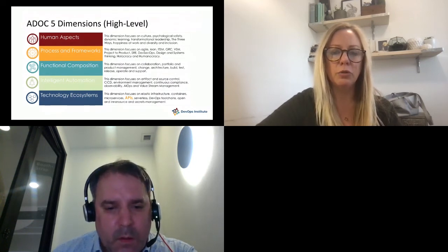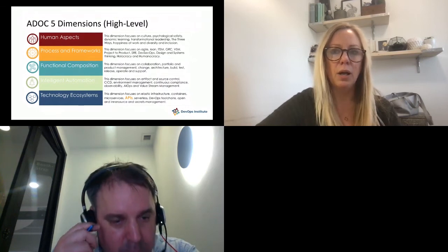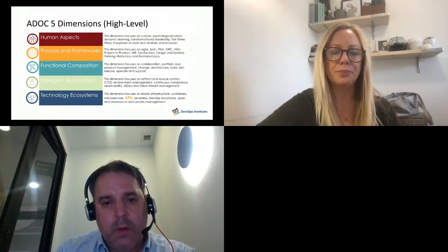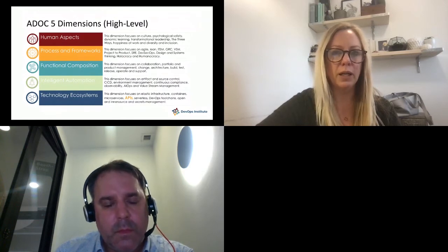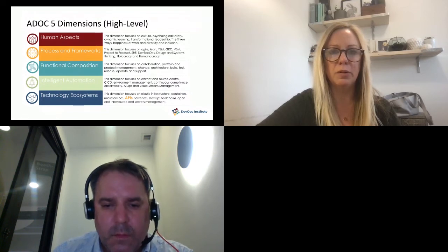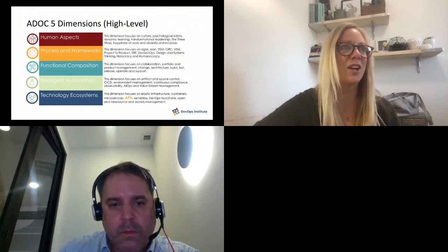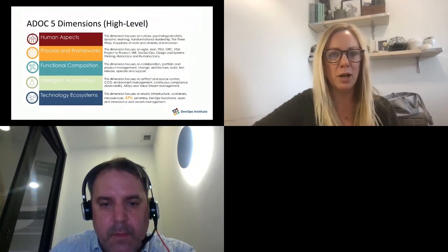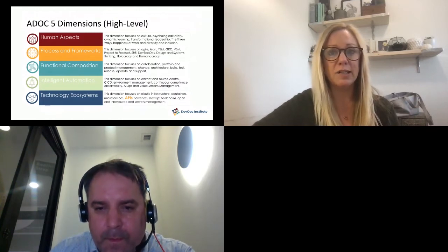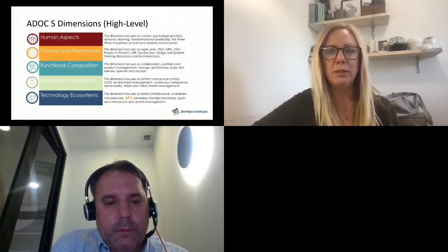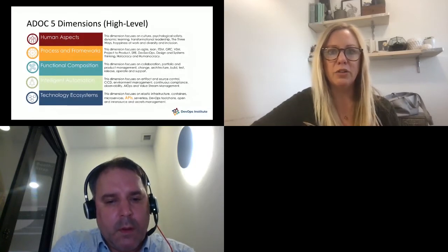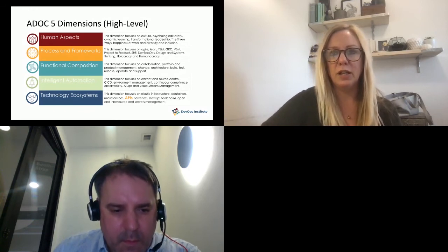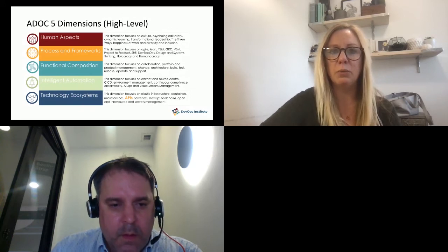The fourth dimension is around intelligent automation — this is really the DevOps toolchain, looking at how we create, deploy, and manage our code. Finally, we look at the surrounding ecosystems we are deploying into. We've drawn a very clear correlation between the use of cloud technologies and APIs. APIs are very hot at the moment. I moderated a panel with NGINX just last week around APIs and learned lots of very interesting things. They're so instrumental to creating ecosystems that really allow us to accelerate organisational performance, which is ultimately what we're measuring in ADOC.